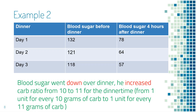In the next example, he wants to find the right carb ratio for dinner time. He checked blood sugar before dinner, entered the numbers into the pump, took a bolus, ate, and checked blood sugar four hours after dinner, repeating this for three days. His blood sugar went down over dinner time on all three days, so he needs less insulin and increased carb ratio from 10 to 11, which is about a 10 percent change.